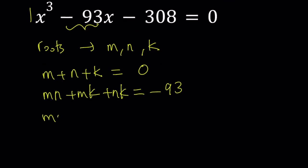What about the product? Well, the product is the coolest part here, because that's what we're going to work on, basically. The product is negative d over a, which is the opposite of the constant term in this case. That will be 308. And that is the key to the solution.